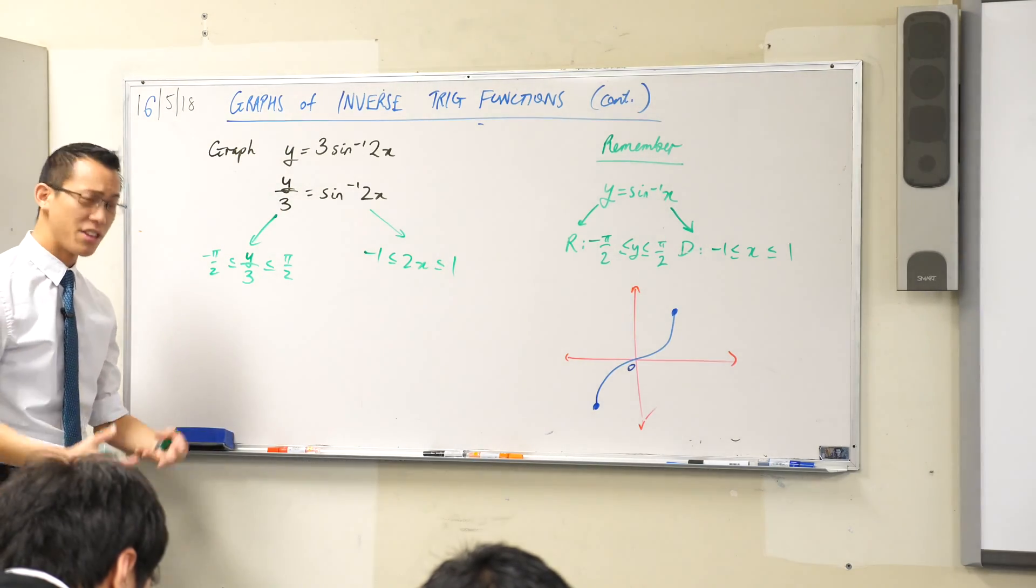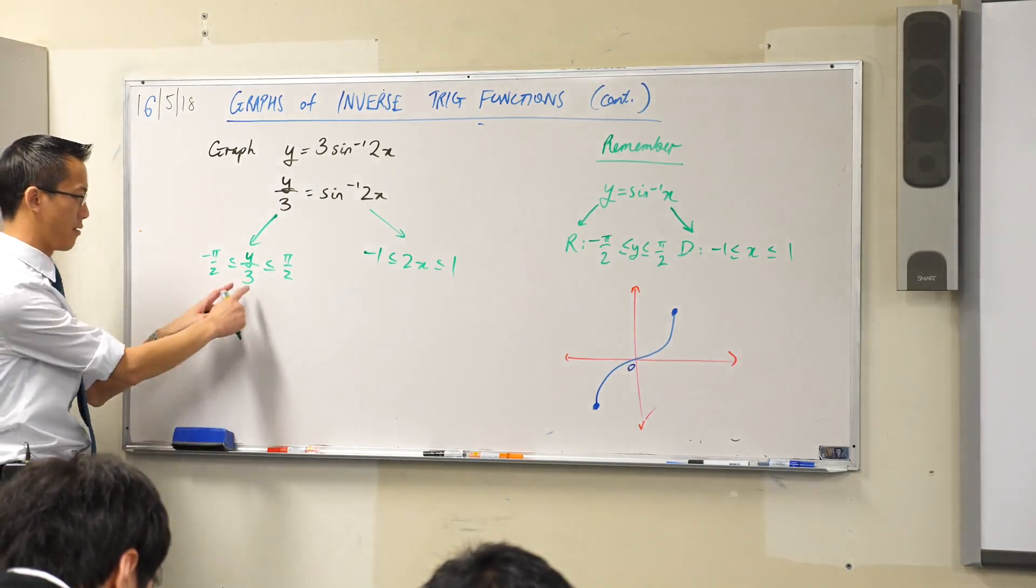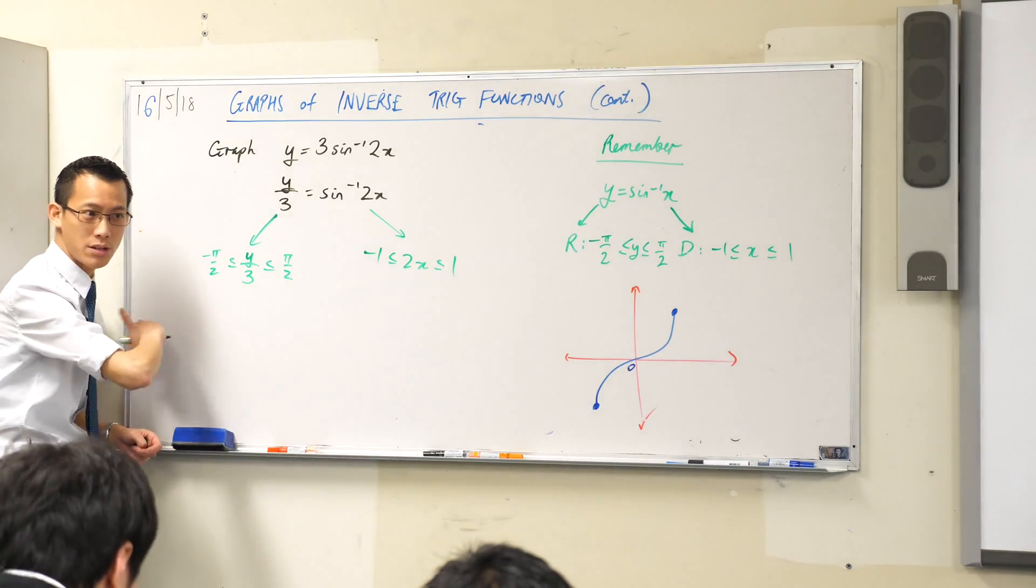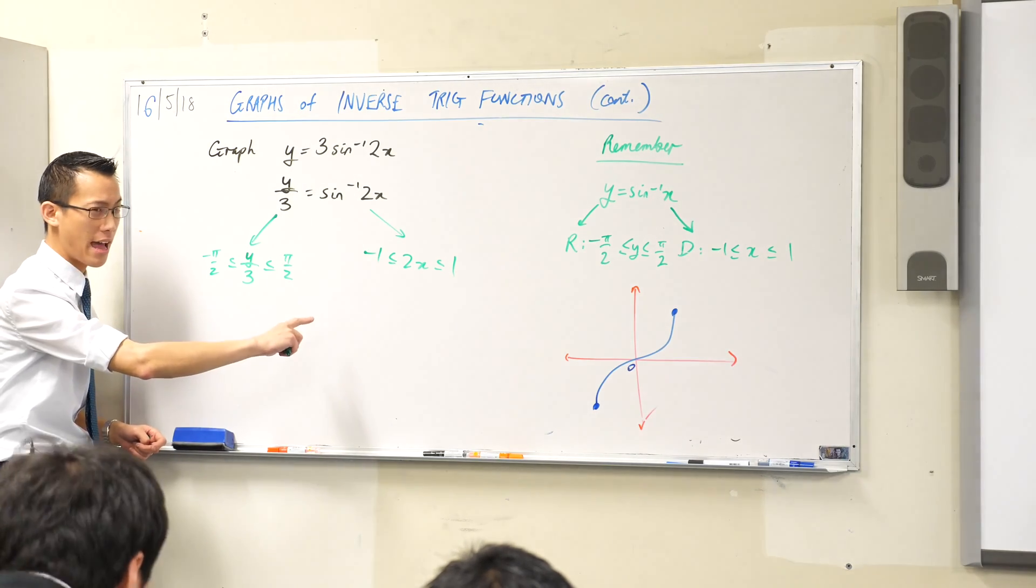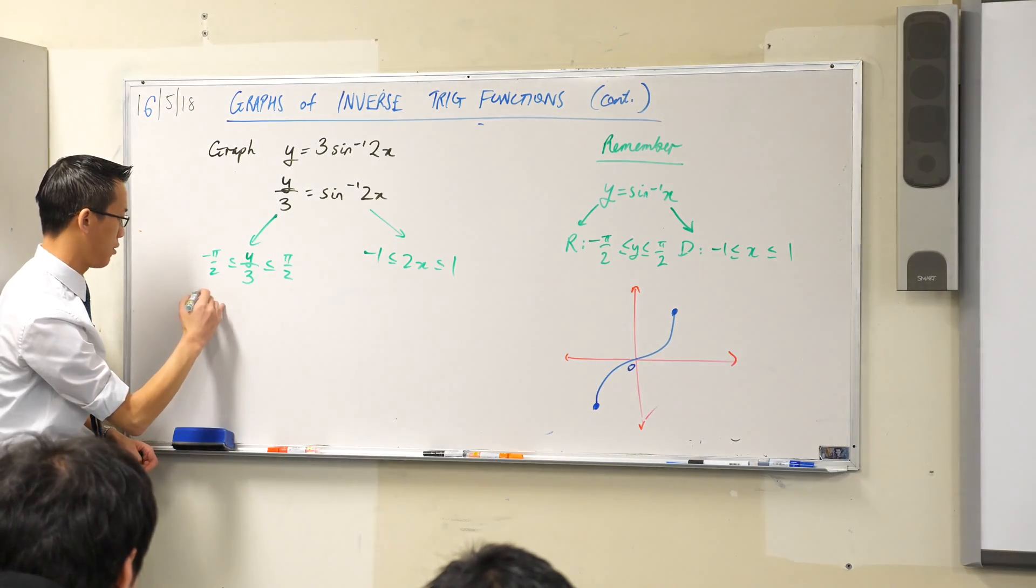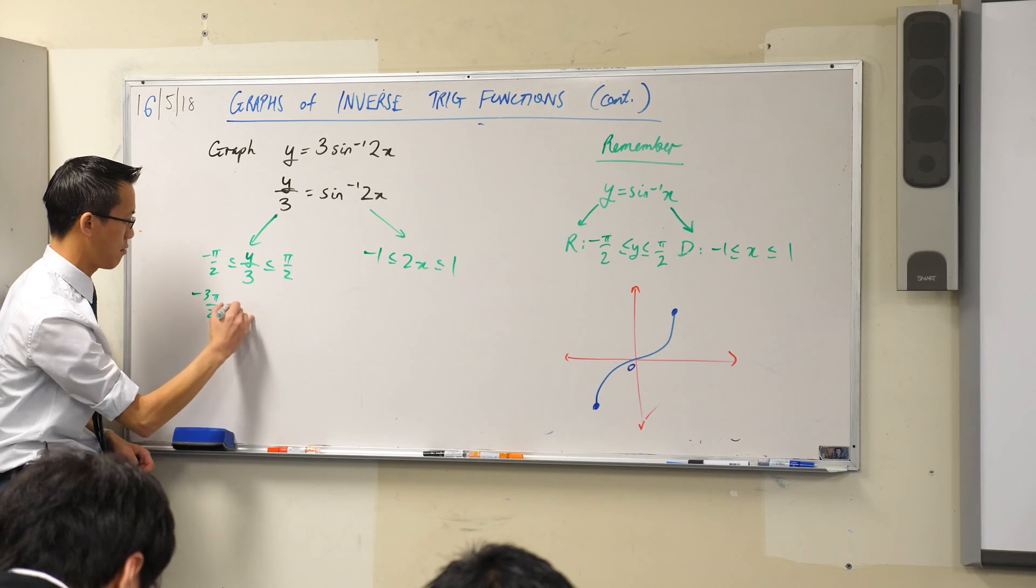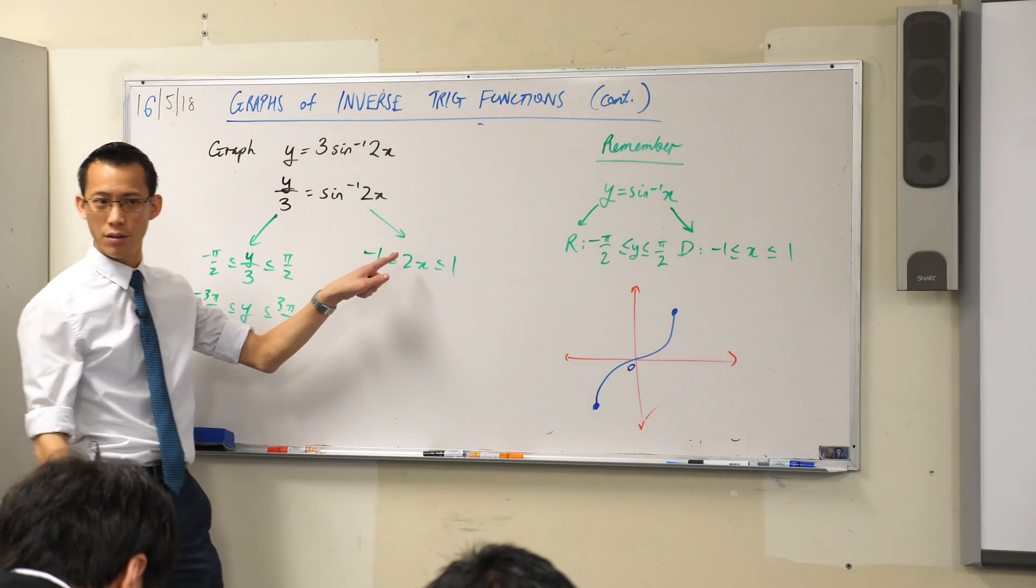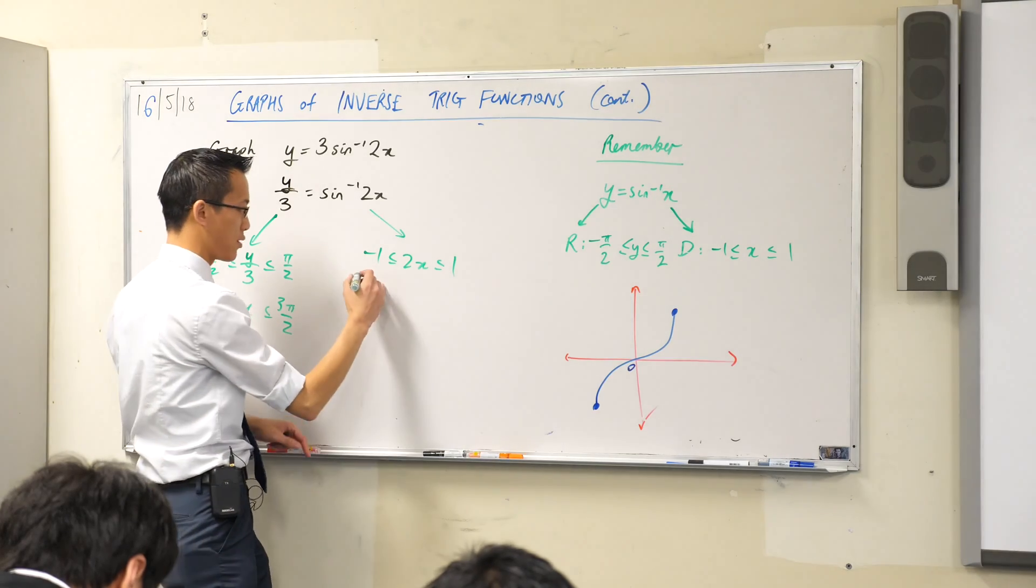So the real range and the real domain are simply y and x on their own, so you can see in this case all I have to do to the whole inequality, what do I do? I'm just going to multiply by 3 and that gives you negative 3 pi on 2 all the way to 3 pi on 2. What about this one? What will I do? Divide by 2. Bingo.